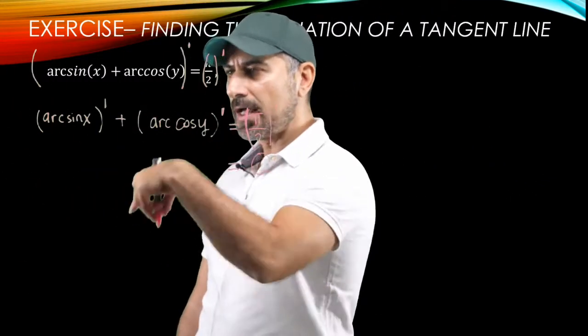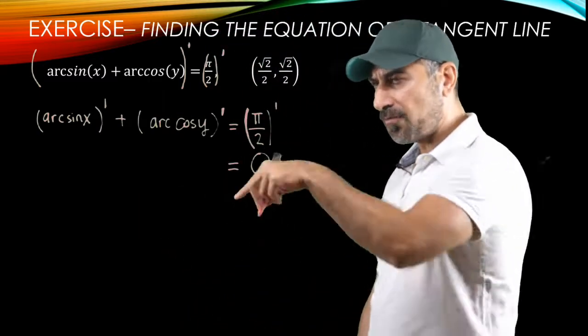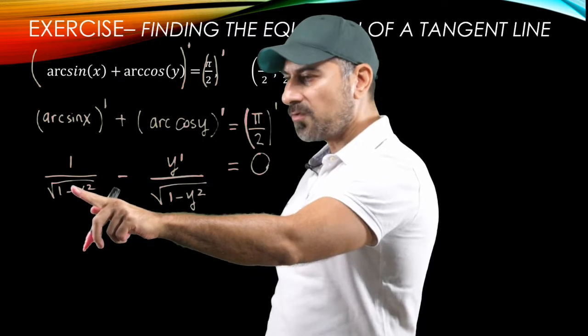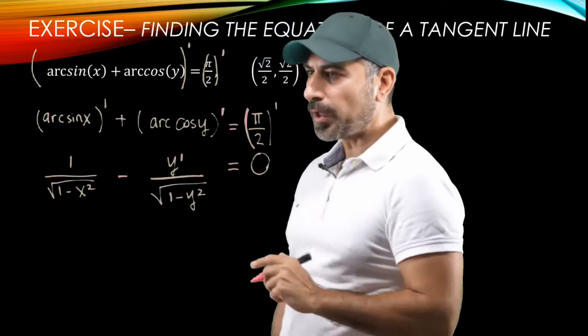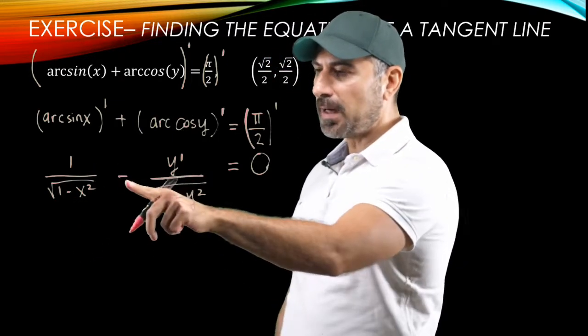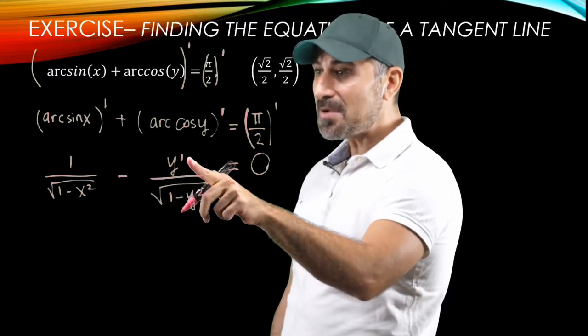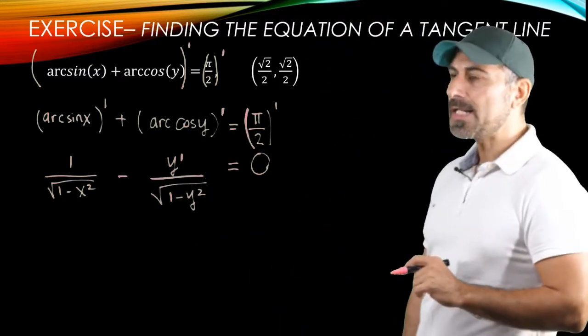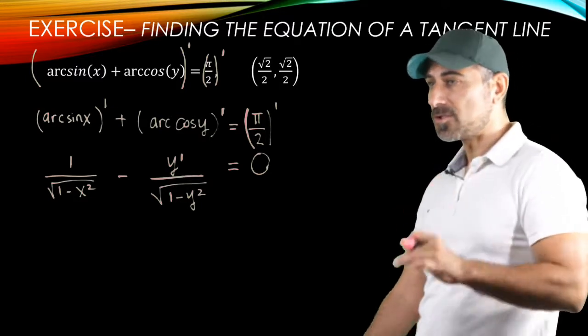And for these two pieces, I will use the formula. The derivative of this one from the formula chart, we have one over radical one minus x squared. And the derivative of this is minus y prime divided by one minus y squared. Again, we keep in mind that y is a function of x in implicit differentiation.